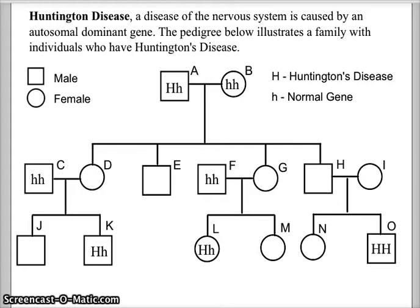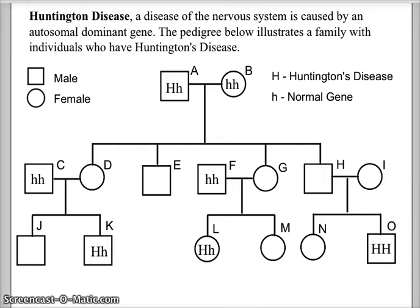This is a three-generation pedigree of a family that has Huntington's disease. Huntington's disease is a disease of the nervous system — it's an autosomal dominant gene. Autosomal means it's carried on one of the first 22 pairs of chromosomes in the human karyotype, and it is not related to the sex chromosomes, so this is not a sex-linked trait. We use capital H for Huntington's disease and lowercase h for the normal gene.